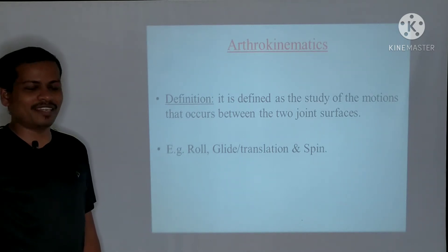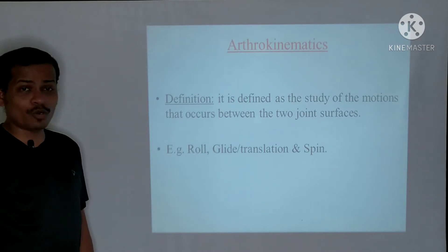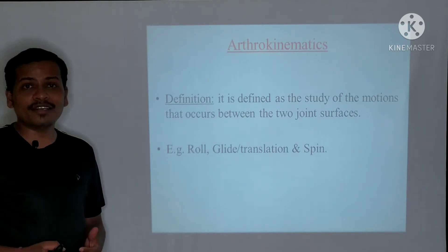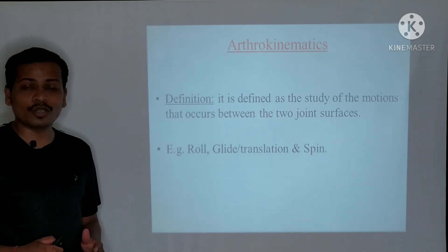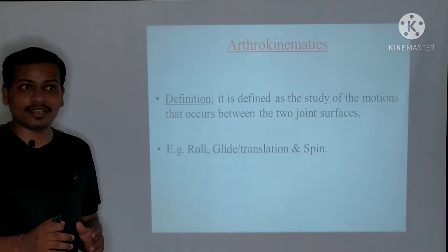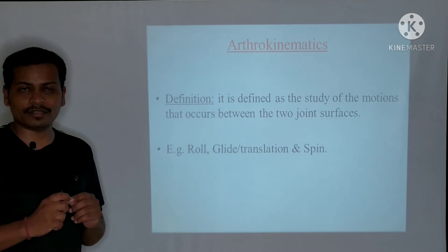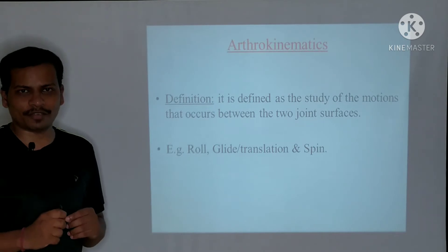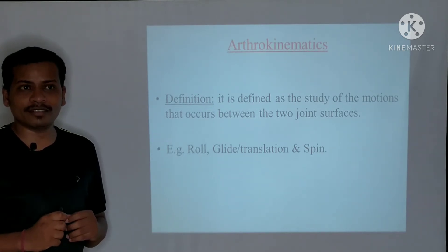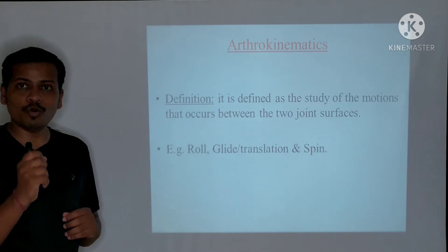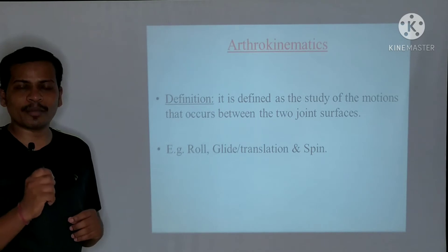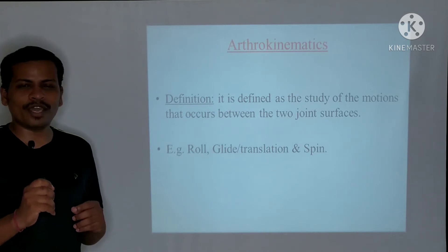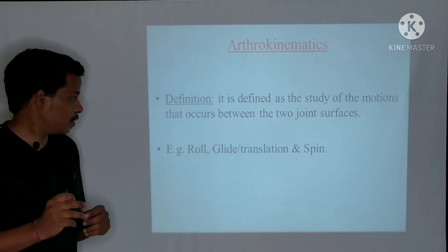Welcome back. In this video we discuss arthrokinematics. Arthrokinematics is defined as the study of the motions that occur between two joint surfaces. Osteokinematics, by comparison, is defined as the study of the motion that occurs between two bones. Understanding this difference is fundamental to being a good physiotherapist.